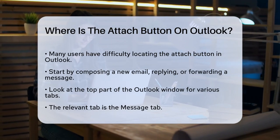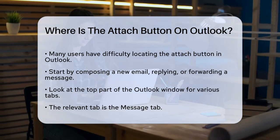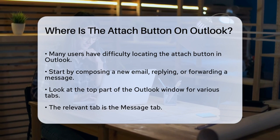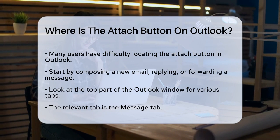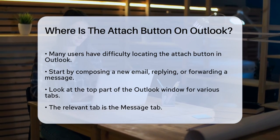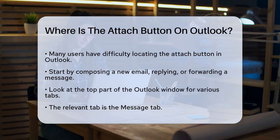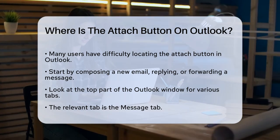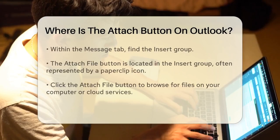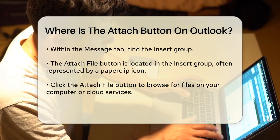First, when you're composing a new email, replying, or forwarding a message, you need to look at the top part of the Outlook window. Here you'll see several tabs, and the one you need is the Message tab. On the Message tab, there's a group called Insert — this is where you'll find the Attach File button. It might be labeled with a paperclip icon, which is a common symbol for attachments.